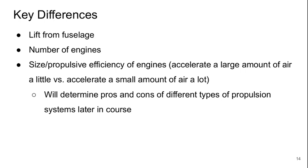Another big difference is the size and propulsive efficiency of the engines. In modern very large engines, we accelerate a large amount of air just a little bit, versus accelerating a small amount of air a lot in the turbojet engines of the 707. We'll determine the pros and cons of the various types of propulsion systems later on in this course.